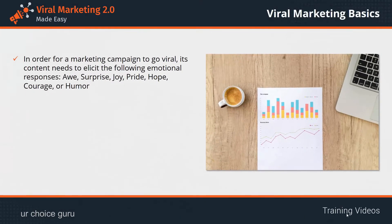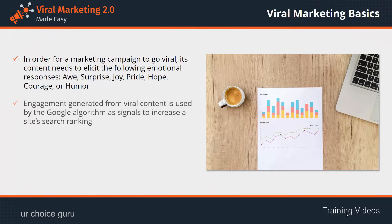In order for a marketing campaign to go viral, its content needs to elicit the following emotional responses: awe, surprise, joy, pride, hope, courage, or humor. Engagement generated from viral content is used by the Google algorithm as signals to increase the site's search ranking.